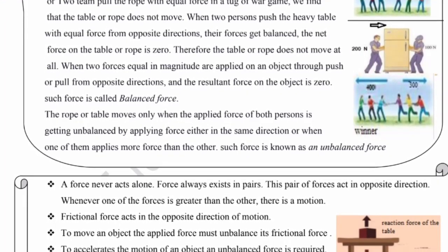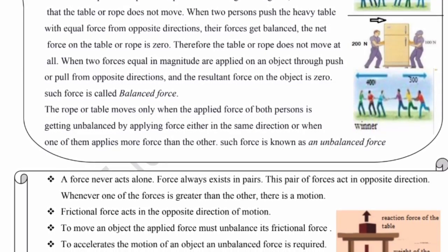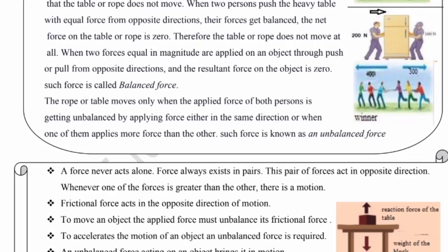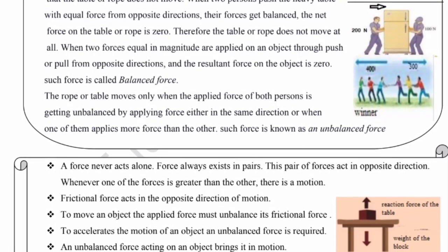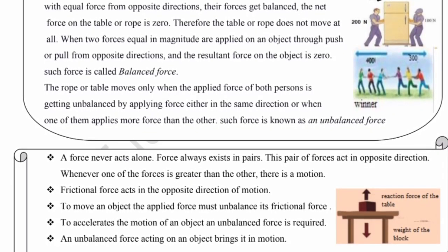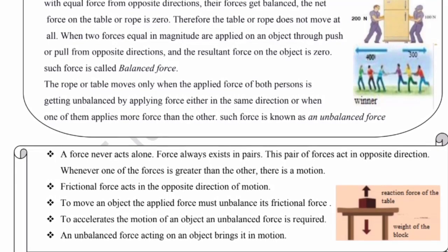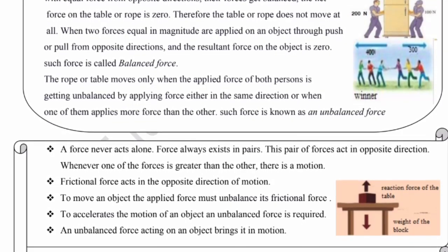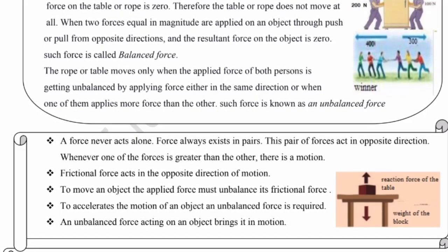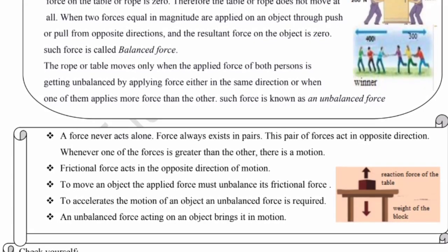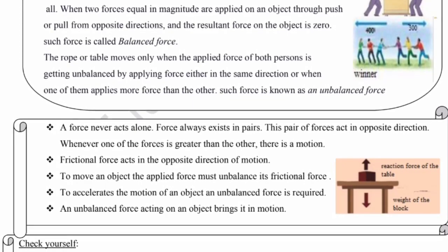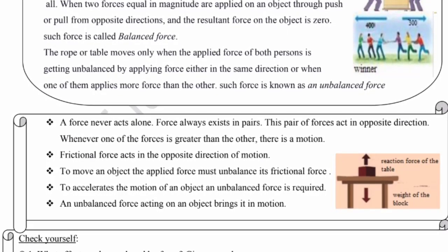The rope or table moves only when the applied forces become unbalanced — either by applying force in the same direction, or when one person applies more force than the other. Such force is known as unbalanced force. Unbalanced force میں ایک طرف سے زیادہ force لگتی ہے — جیسے رسی کھیچنے میں ایک طرف تکڑا آدمی ہو تو وہ کھینچ لیتا ہے۔ Forces always exist in pairs acting in opposite directions; when one force is greater, there is motion.